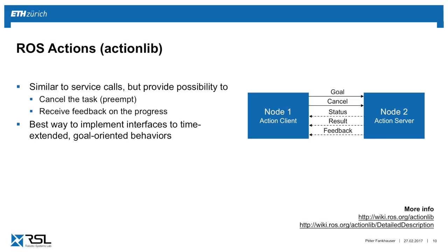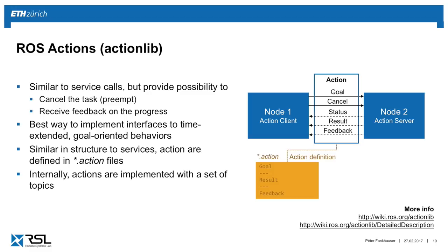In comparison to services, with actions you also get feedback. If you tell the robot to go somewhere, you continuously get feedback — 'I've done one meter, I've done two meters', etc. So it's a back-and-forth between the action client, which sends out the goal and can cancel it, and the action server, which sends continuous feedback before achieving the goal and then sends the result. Looking at an action definition: similar to services, we have a goal on top, then three minuses and the result, and also a feedback section in between. These action definitions are stored in .action files. Internally, actions are implemented as simple raw topics, but they facilitate this back-and-forth mechanism.